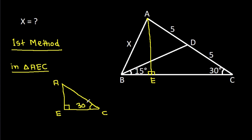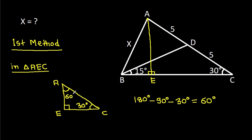Angle DCB is 30 degrees, so angle CAE will be 180 minus 90 minus 30 degrees, that will be 60 degrees. So this angle is 60 degrees.